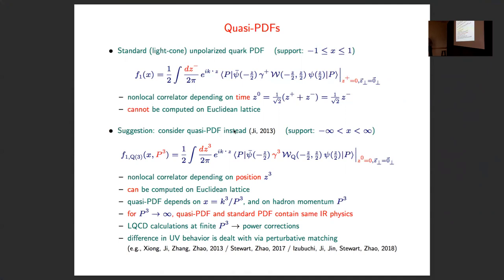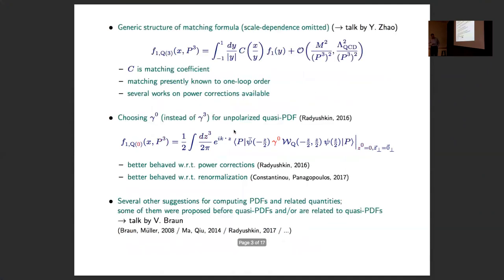Young is one of the key players in that field, and I think this matching puts this entire approach on a safe theoretical ground. In a schematic way, this is a generic structure for a matching formula: the quasi-PDF can be written in an OPE-type expression in terms of the standard PDF and a calculable coefficient function, or what people call a matching coefficient. Those matching coefficients are presently known up to one-loop order, which could be a source of systematic uncertainty.